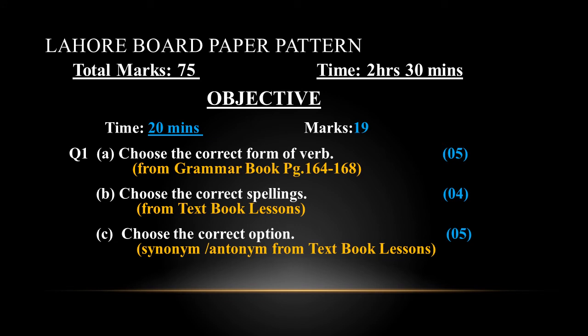Part C is 'choose the correct option.' Usually words or sentences are given with some highlighted or underlined word. You are asked to find out the synonym or antonym out of the given options. It is of 5 marks.